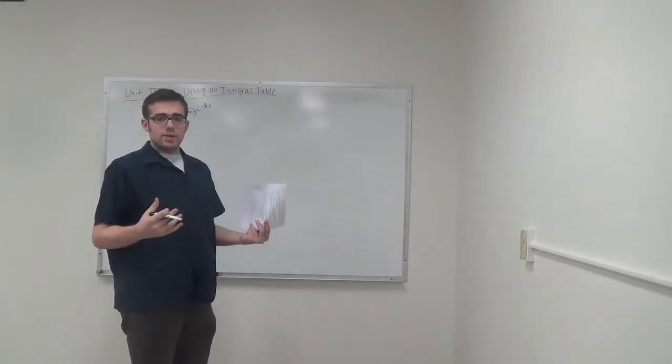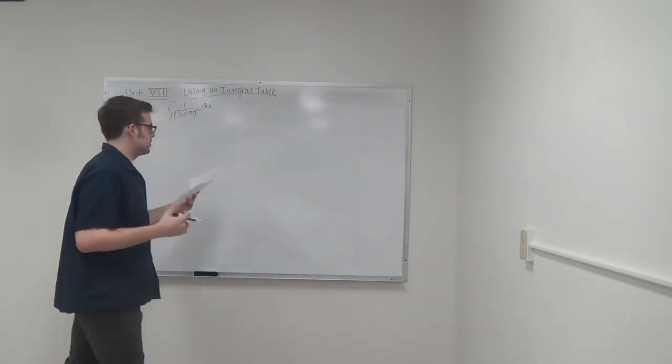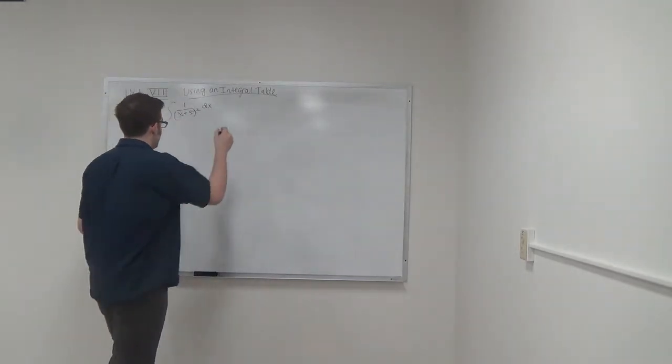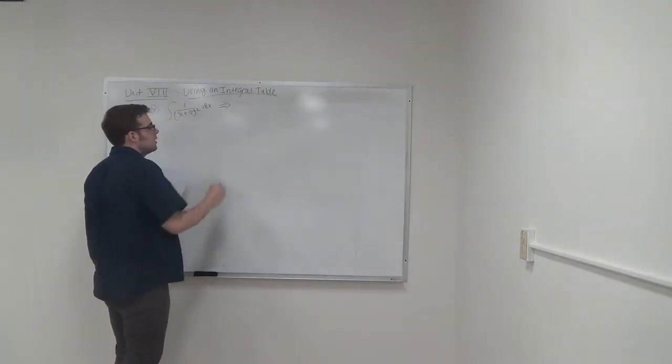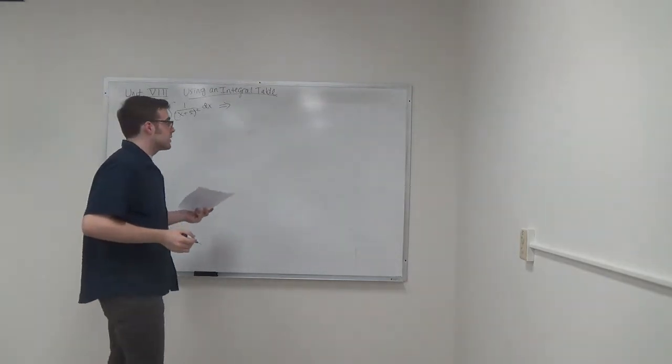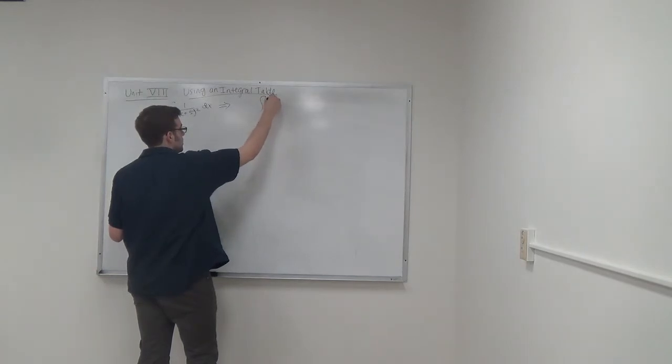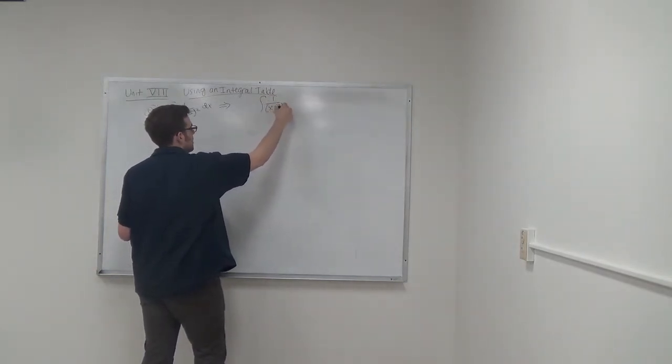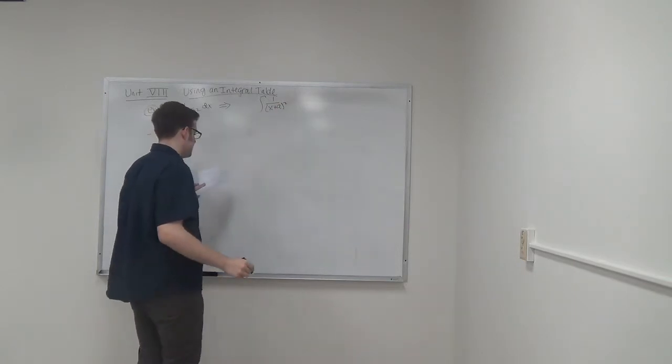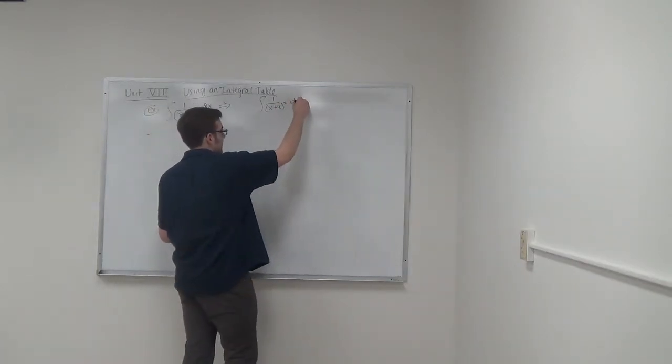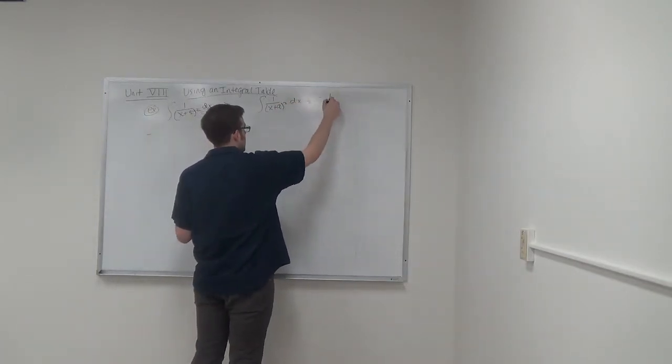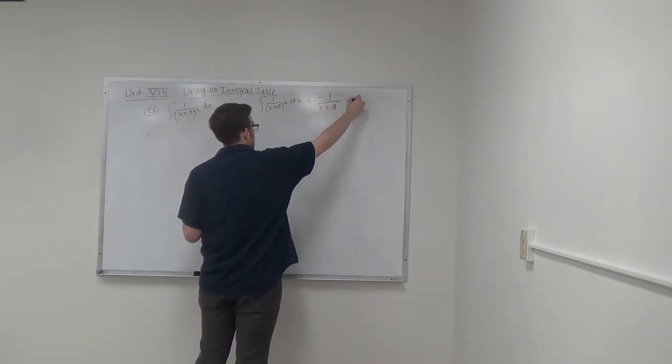There are ways that we can do this, but the way that we're going to do this is using the integration table. We can also use substitution and we'll get the same result. The integral of 1 over x plus a squared dx is equal to negative 1 over x plus a plus c.